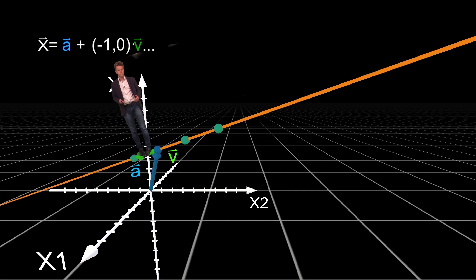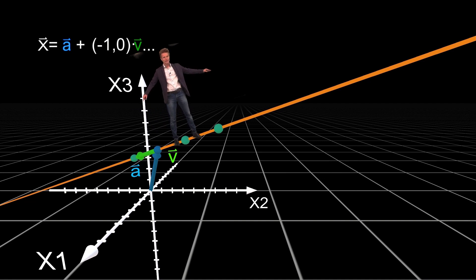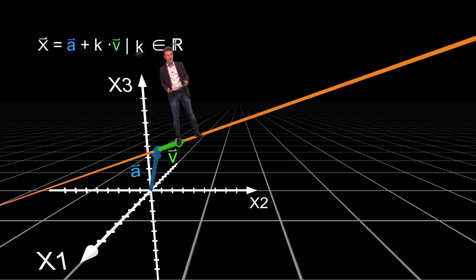But now we want to express with our equation that we can reach any point on this straight line. To achieve this, we just multiply the direction vector by a letter instead of a concrete number. Take k, for instance. k can assume any real number, and since the real numbers are complete, we can use this equation to determine any point on our straight line.